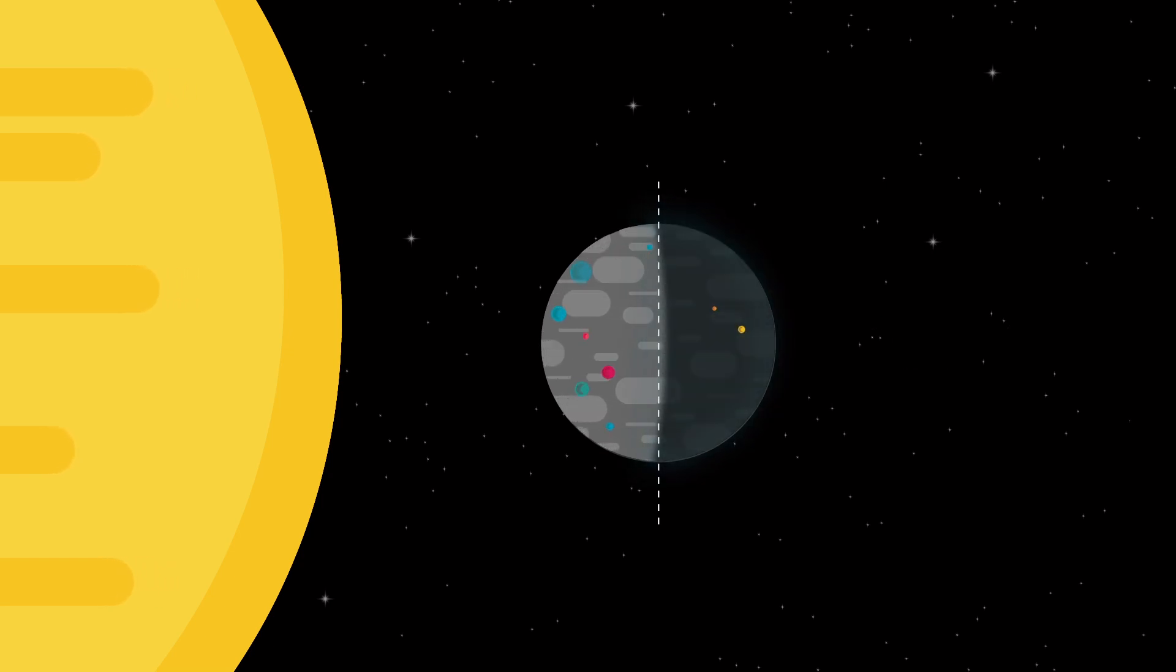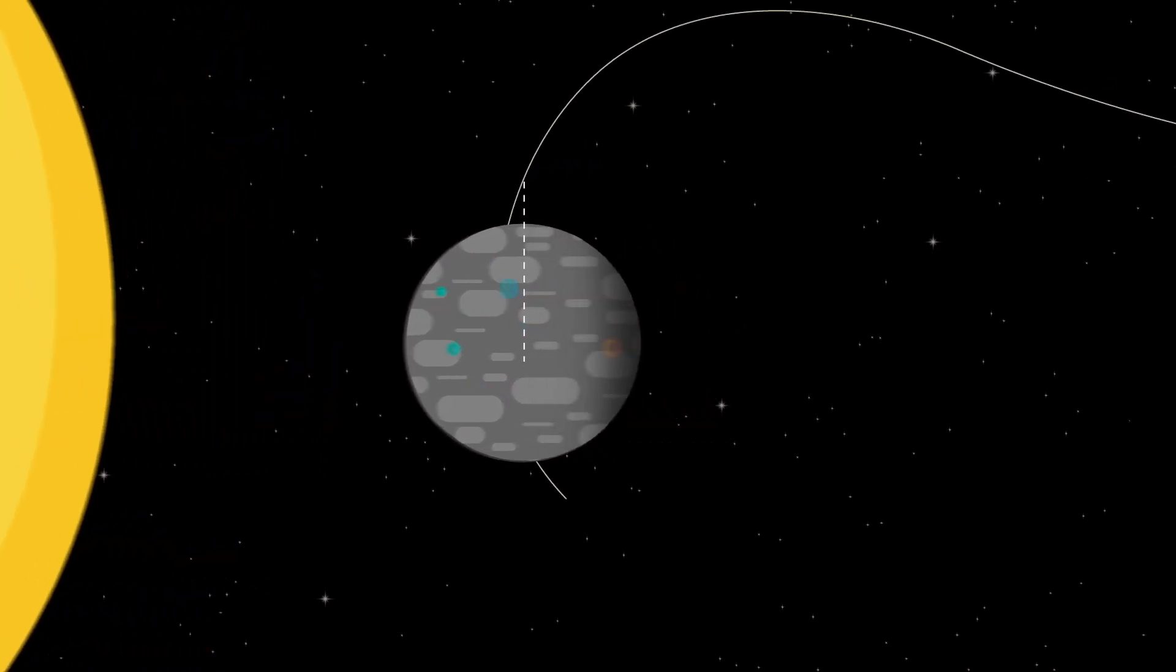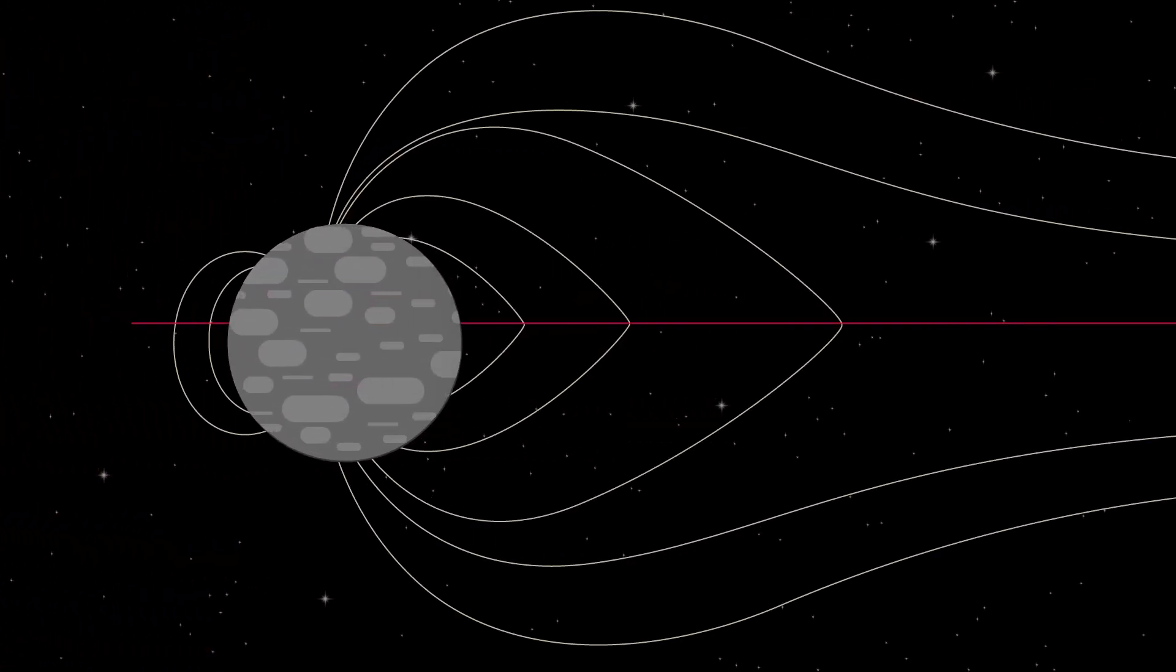Mercury has a bafflingly complex chemistry, a bizarre magnetic field, and even craters full of ice.